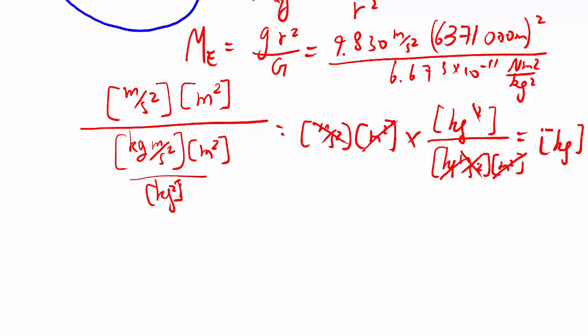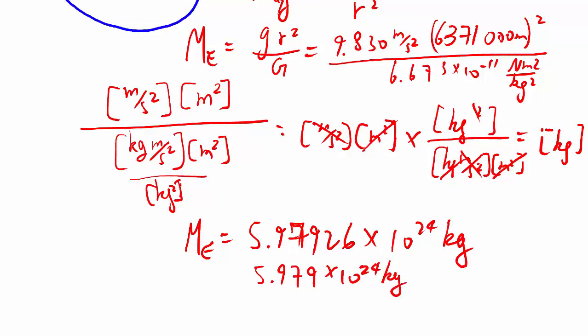as we would expect for the mass of the Earth. The rest, you put in all those numbers, and you'll get 5.97926, and so on and so forth, kilograms, which compares very well with the 5.979 times 10 to the 24 kilograms that was given to us as the reference.